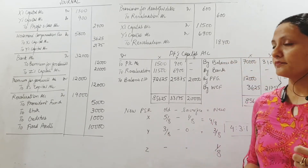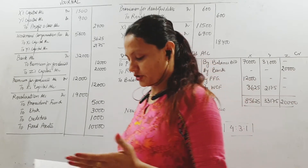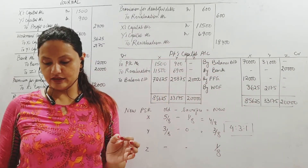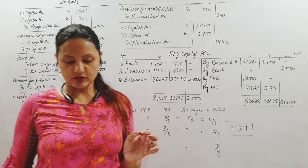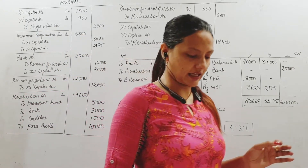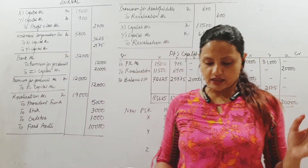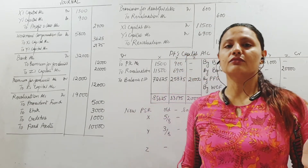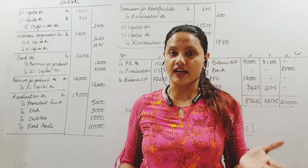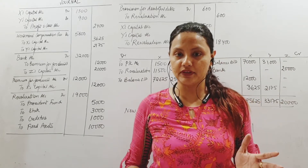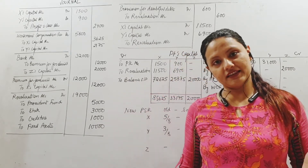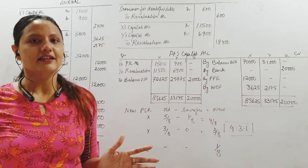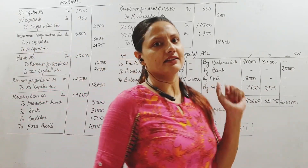As you have read the sum, you are supposed to pass journal entries, necessary accounts and a new balance sheet. Also calculate the new profit sharing ratio. So that means you will have to prepare the revaluation account, partner's capital account, the new balance sheet and the new profit sharing ratio. Quite a handful.